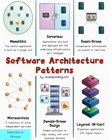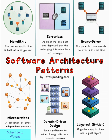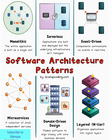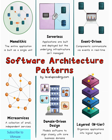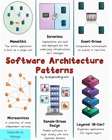Next, we have microservices architecture. Microservices architecture breaks down your application into a collection of small, independent services, each responsible for a specific business function. Each service can be developed, deployed, and scaled independently. This pattern offers tremendous flexibility. Different teams can work on different services using different technologies. You can scale only the services that need it, and deployments become faster and less risky because you're only deploying small, focused services. However, microservices introduce significant complexity. You need to handle service-to-service communication, data consistency across services, distributed monitoring, and orchestration. The operational overhead can be substantial, especially for smaller teams.